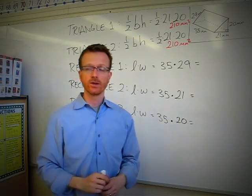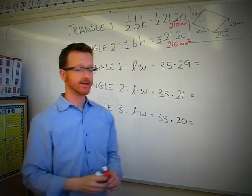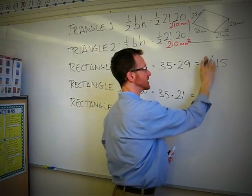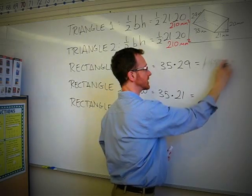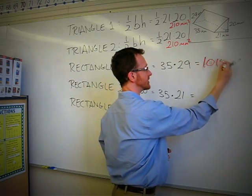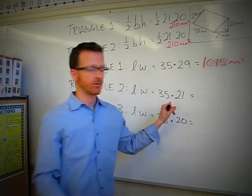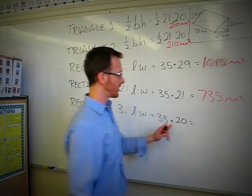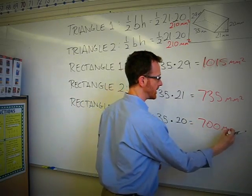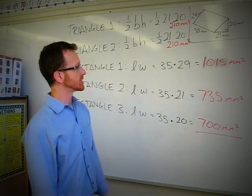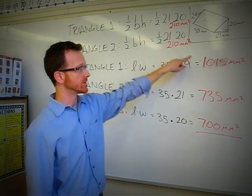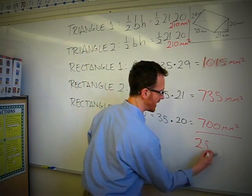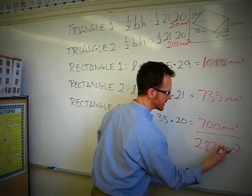When we do our calculations, we will find that 29 times 35 is 1,015 millimeters squared. 35 times 21 is 735 millimeters squared. And 35 times 20 is 700 millimeters squared. When we add those together, 210 plus 210 plus 1,015 plus 735 plus 700, we achieve our answer of 2,870 millimeters squared.